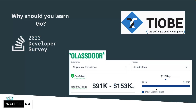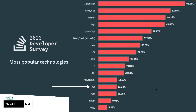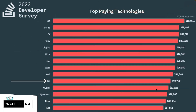According to the Stack Overflow developer survey, Golang is one of the most popular, loved and desired languages. As per the Tiobe Index, right now it's at position 11 and last year it was 12, so each year it is improving its position. As per the Glassdoor report, a Golang developer in the US can have a pay range between 90k to 150k, and in some cases it can even reach 200k. So as we can see from the 2023 developer survey, Golang is in the most popular technologies and always in the top, with an average salary of 90k plus.